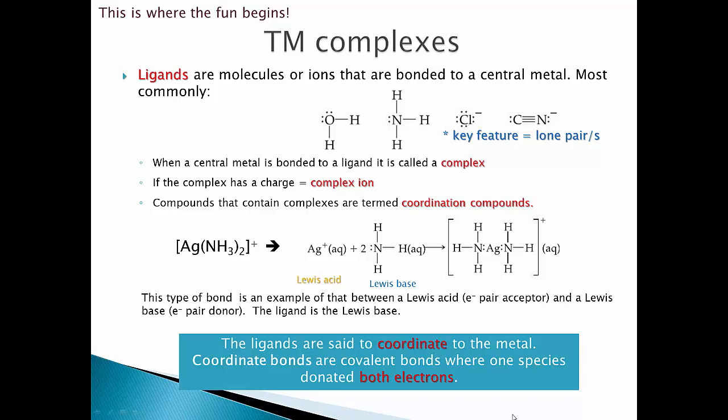Transition metal complexes: ligands are molecules that bond to the central metal. Common ones are water, NH3, Cl−, and the cyanide ligand. What they all have in common is they have lone pairs of electrons, so they act as Lewis bases. When the central metal is bound to a ligand it's called a complex; when that complex has a charge it's called a complex ion. Compounds that contain complexes are termed coordination compounds.